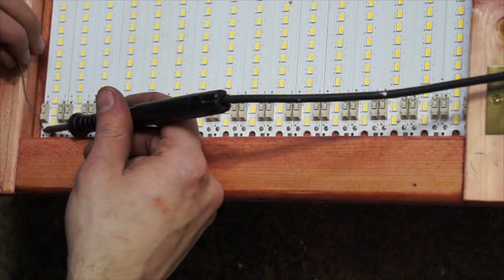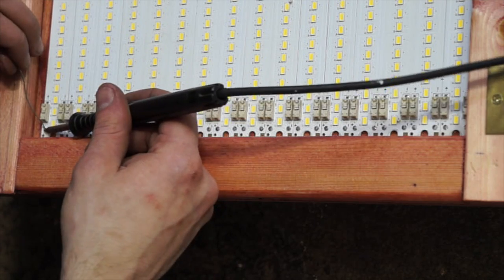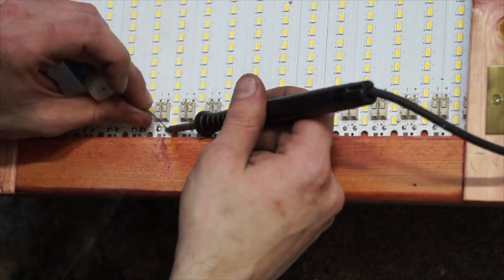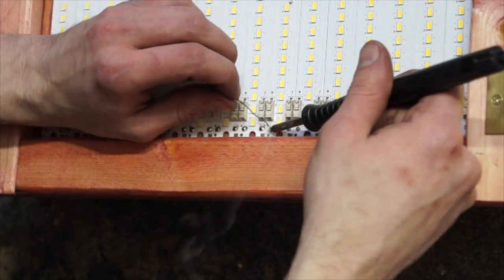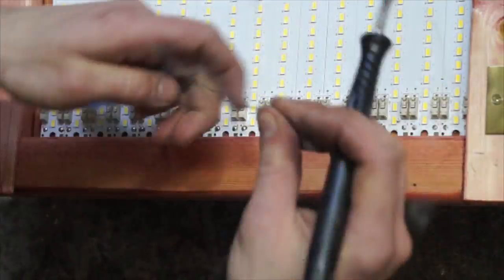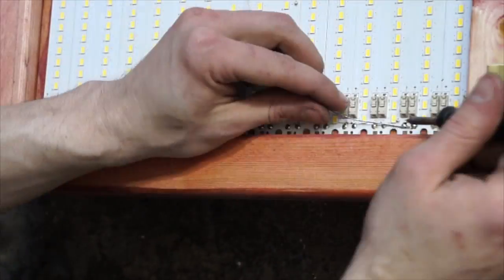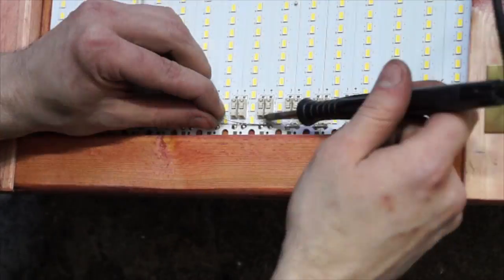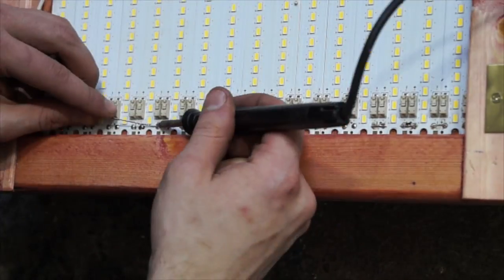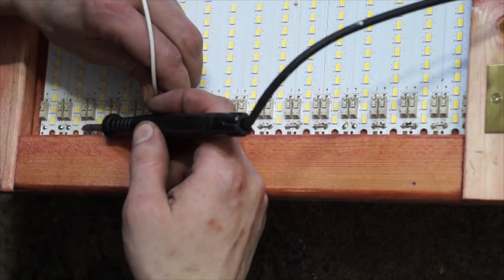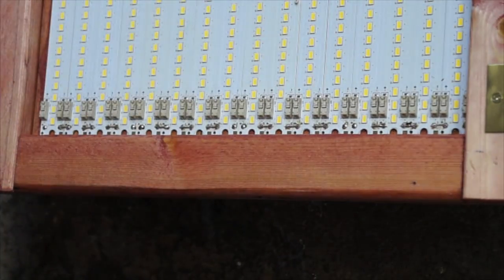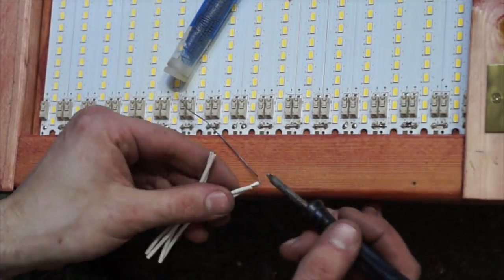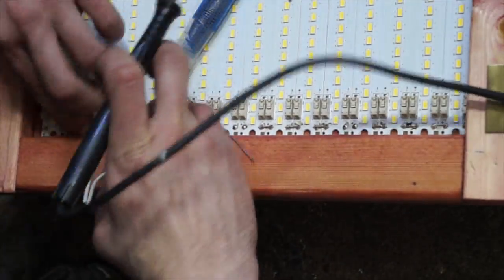First, the input terminals of each LED strip are tinned with some solder. Then small lengths of interconnecting wire are added to those pads, which create individual groups of 4 LED strips each.